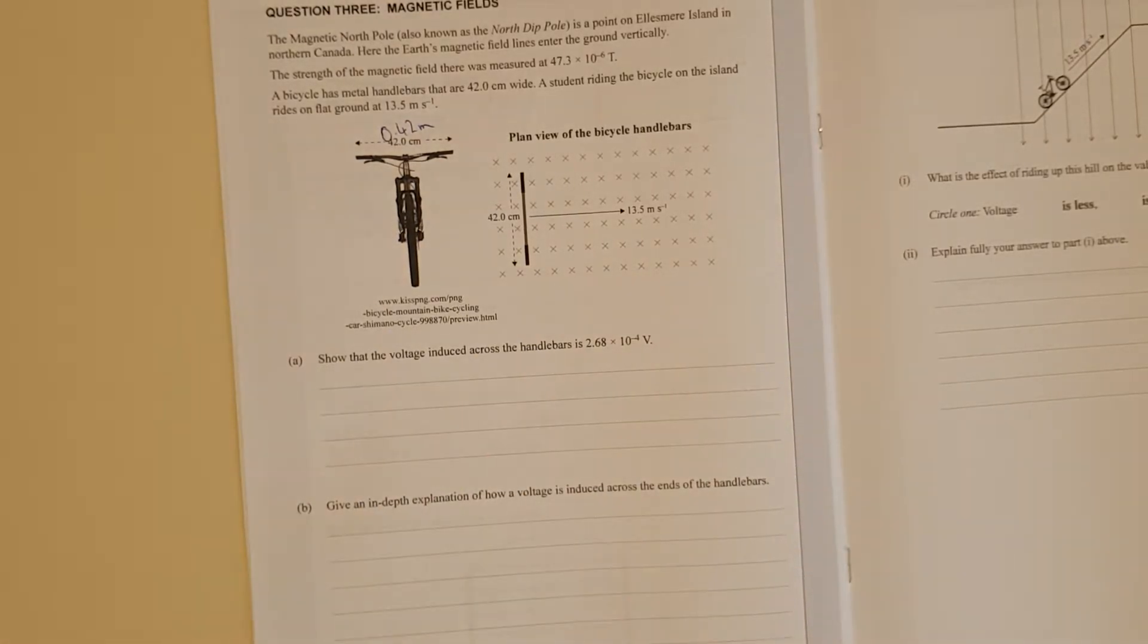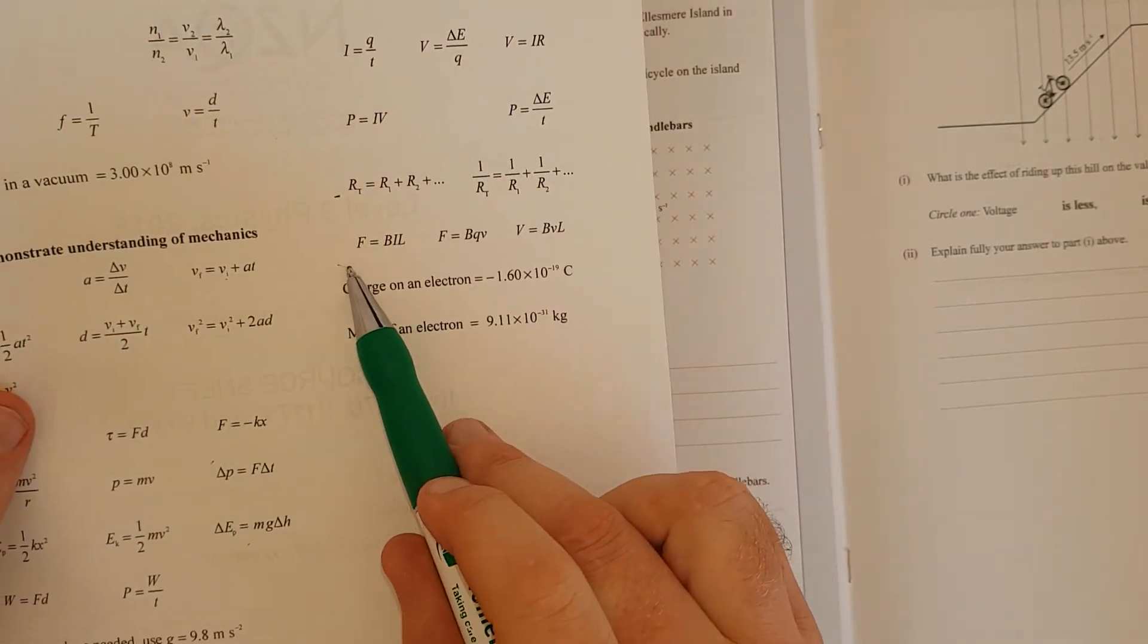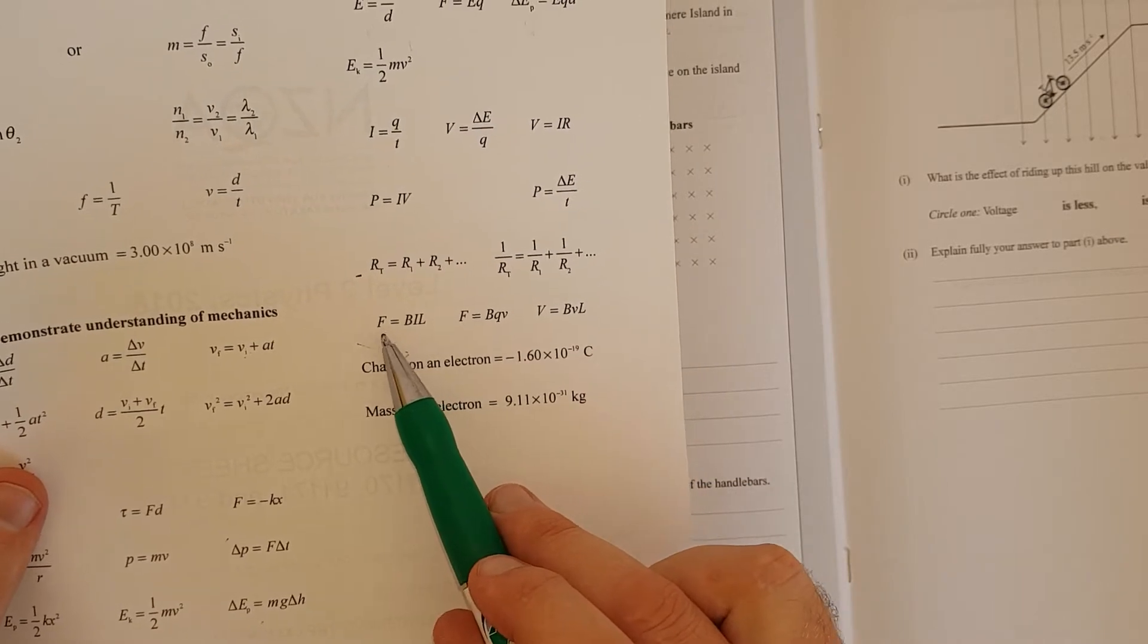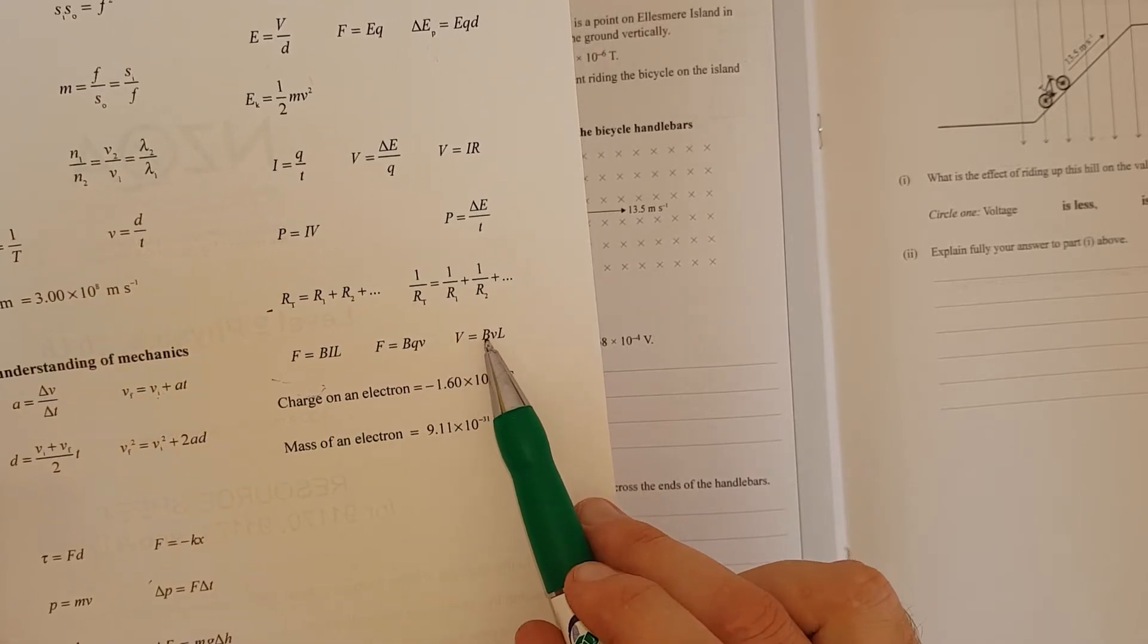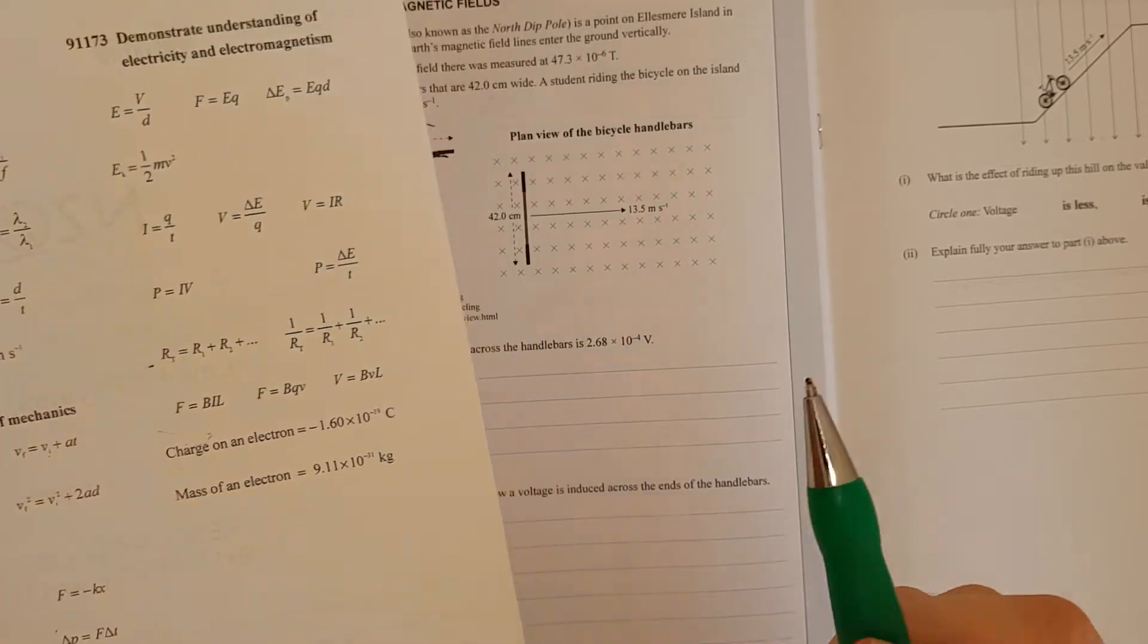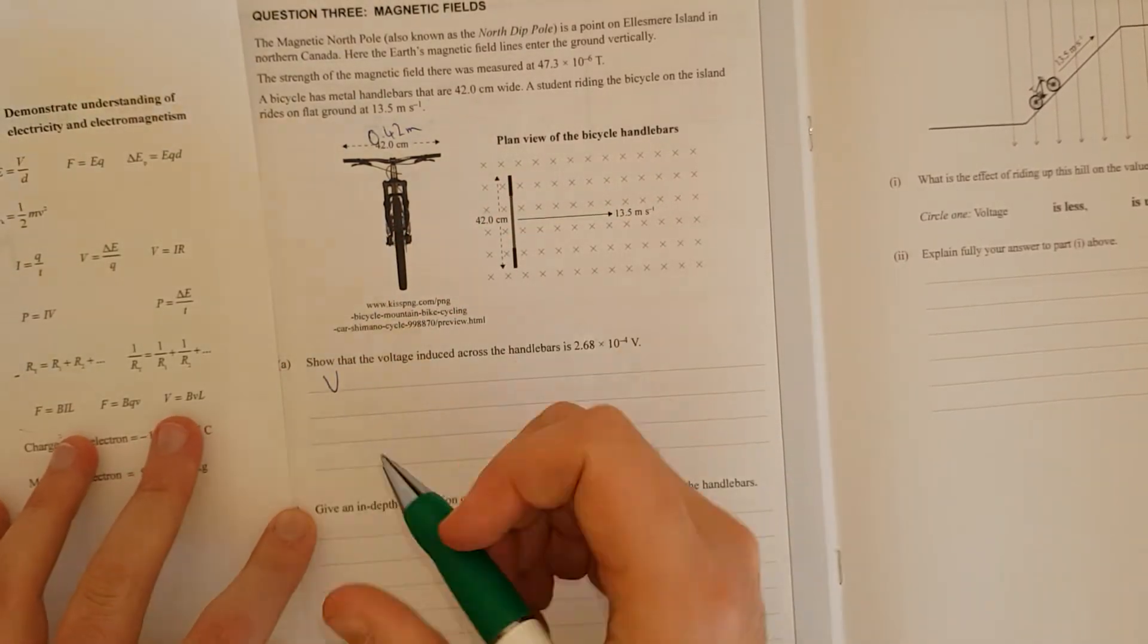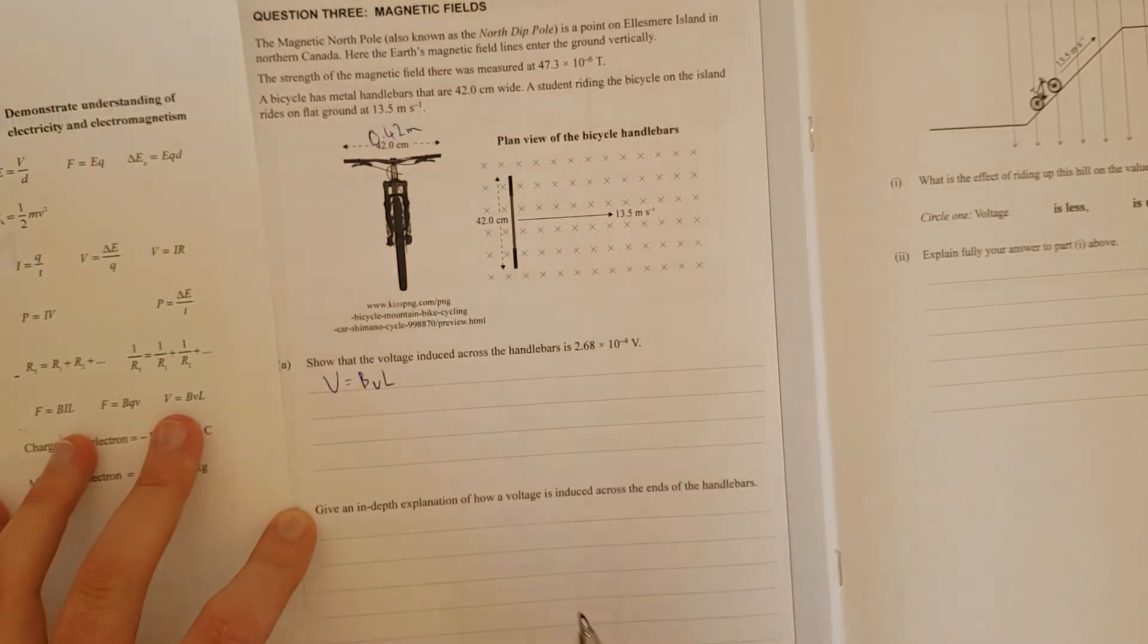In your formula sheet, you have basically only 3 formulas for electromagnetism. Use the force to pay the bills. F equals BIL, so the force equals magnetic field times current times length. F equals BVQ and voltage induced equals magnetic field times the velocity times the length. So we're obviously going to use the third one. Voltage equals magnetic field times the velocity times the length that cuts through the magnetic field.